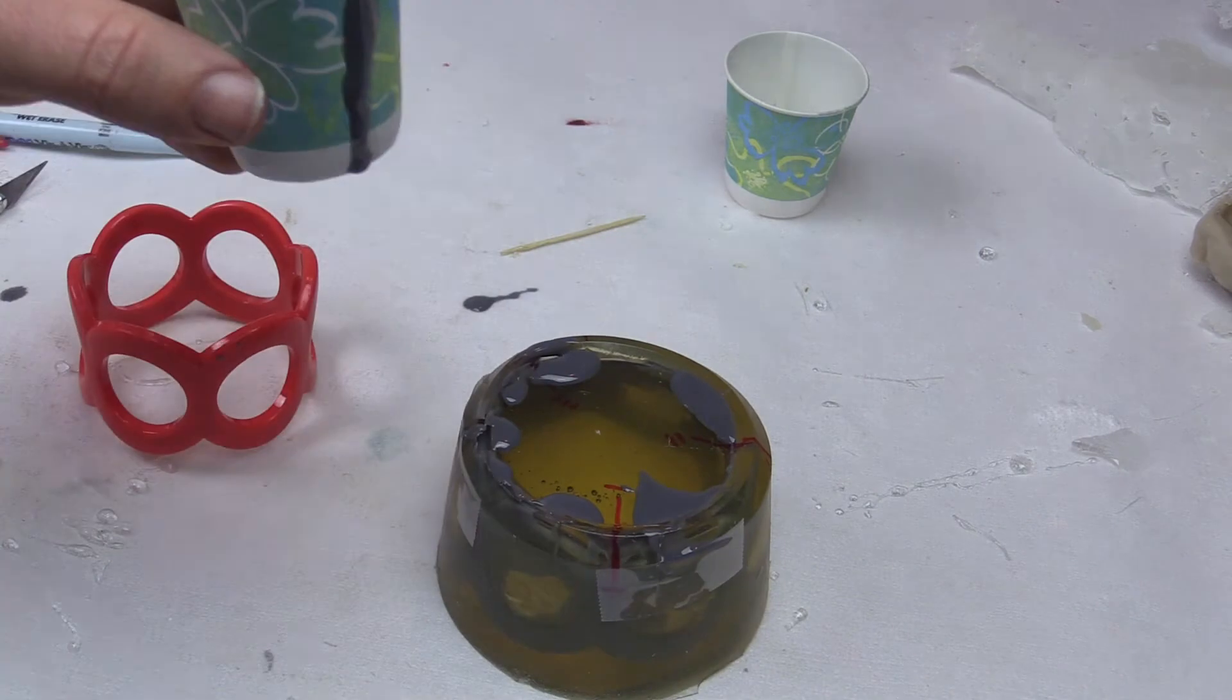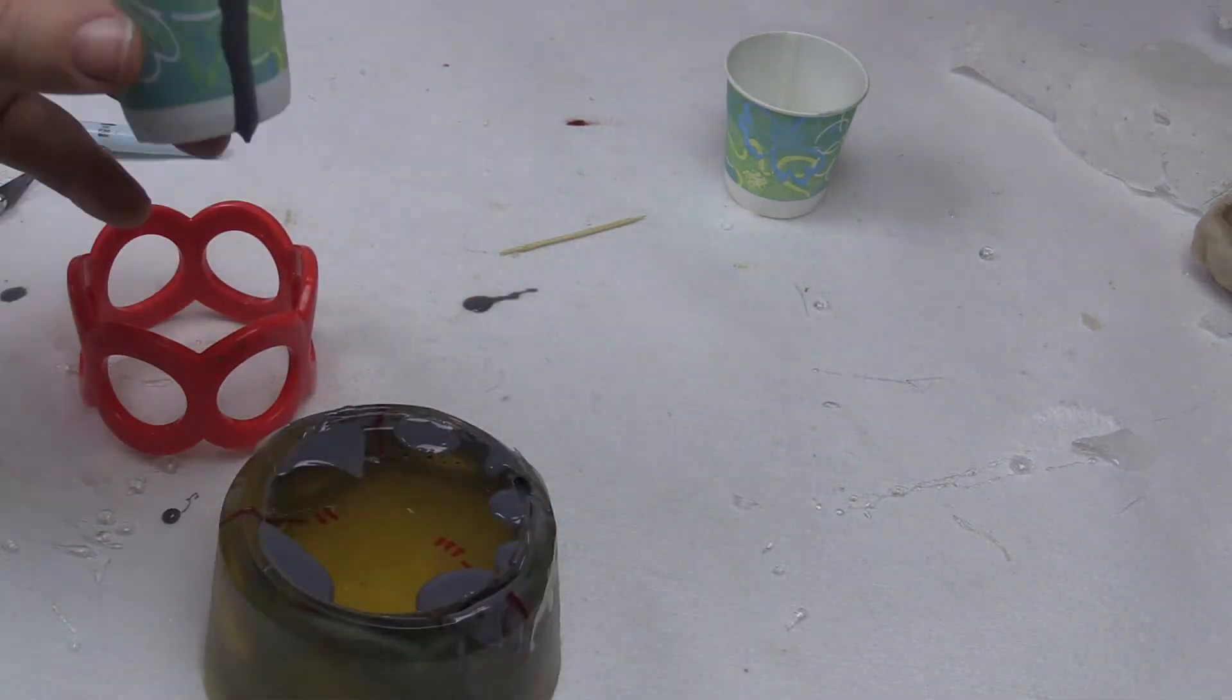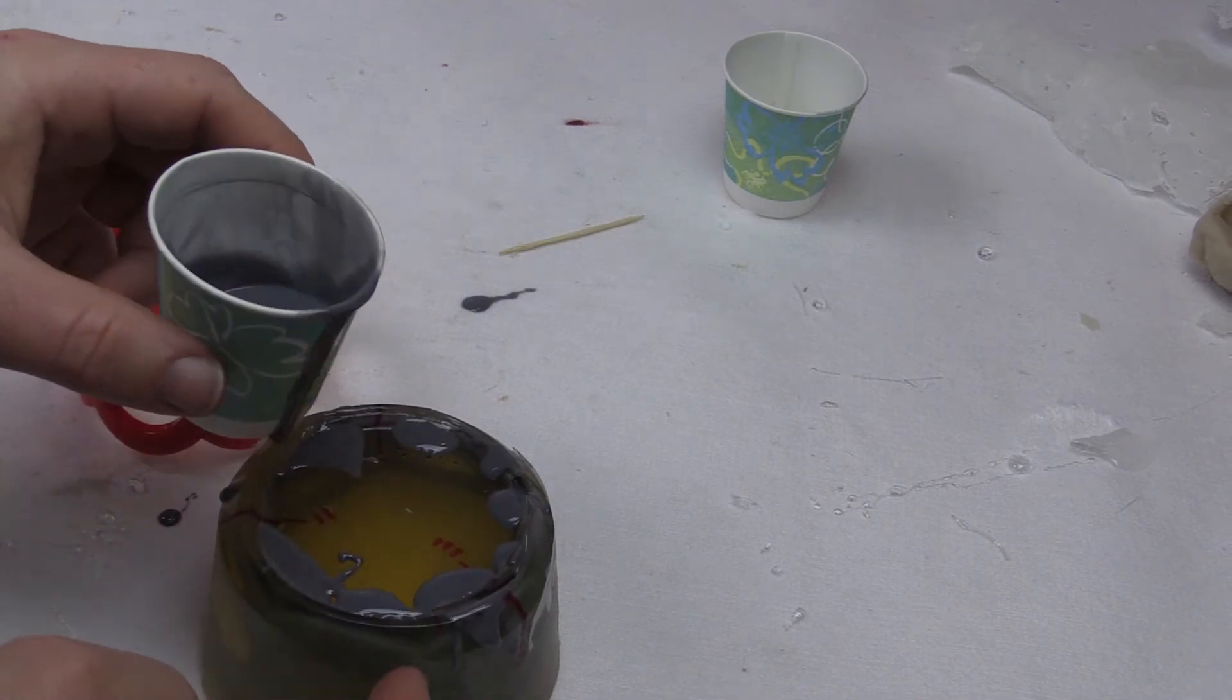10 hours later, after this part has had time to cure, you are ready to pull out the duplicated casting in your new bracelet.